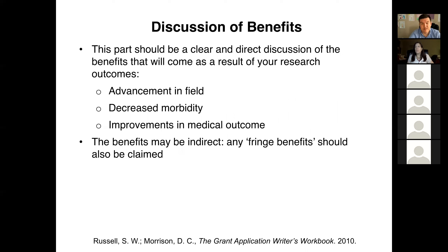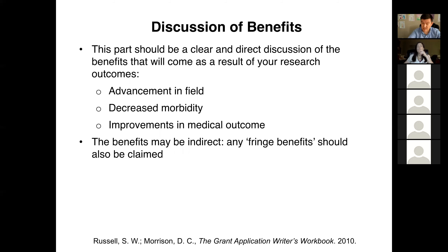Finally, you conclude the background and significance section with a clear and direct discussion of the benefits that will come as a result of your research outcomes — whether these are advancements in the field, something tangible such as decreased morbidity or improvement in medical outcomes. You do want to discuss all of these things. If you may have something as an indirect outcome, such as what we call fringe benefits, these should also be claimed. You really should educate the reader about what the benefits of this research would be.